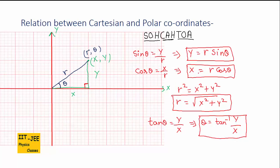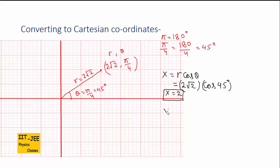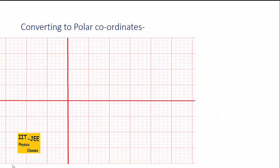We use x equals r cos theta and y equals r sin theta. Plugging in r equals 2√2 and theta equals 45 degrees: x equals 2√2 cos 45° which gives x equals 2. Then y equals 2√2 sin 45° which gives y equals 2. So the Cartesian coordinates are (2, 2). You can verify this on the graph: x equals 2 and y equals 2.